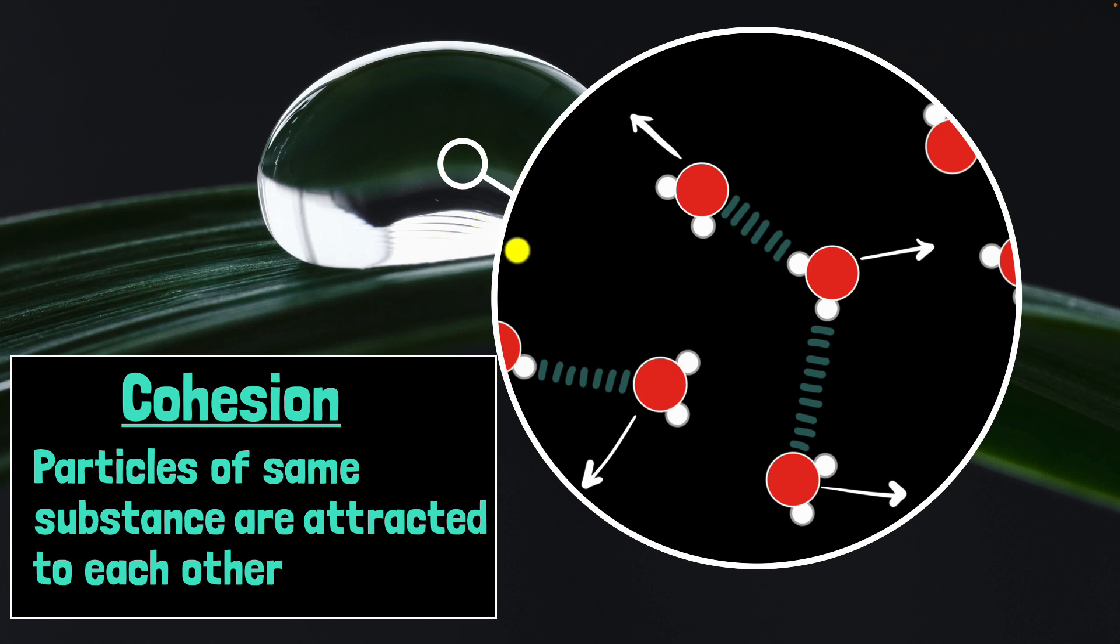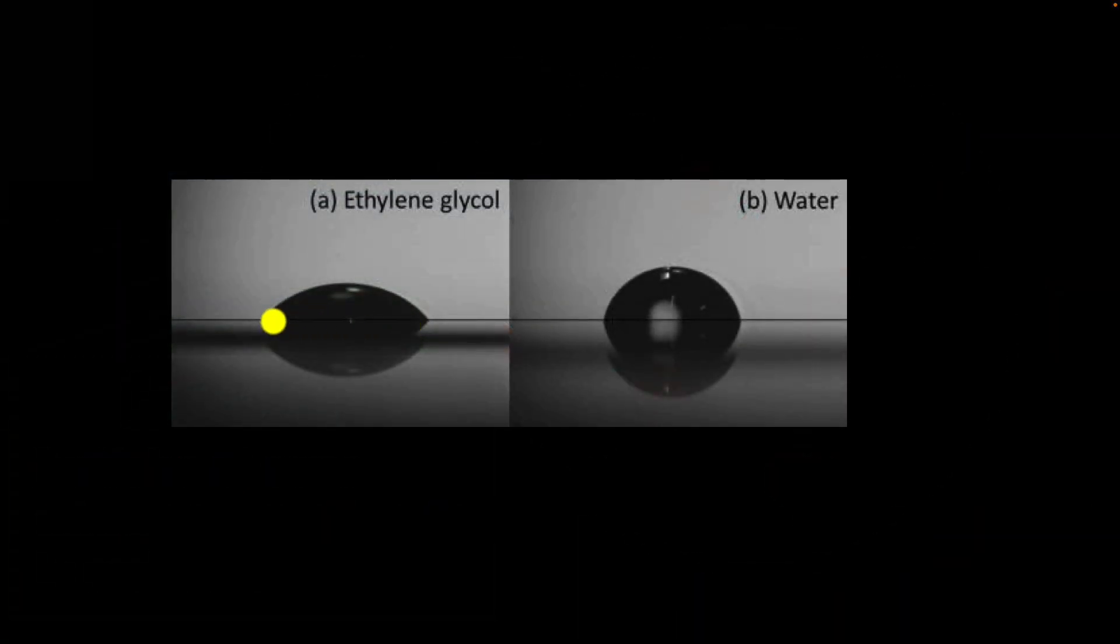And guess what? Turns out that cohesion is much stronger in water compared to other liquids. For example, look at the drop of, say, an alcohol. You can see that it's much more flattened compared to that of water. That's because cohesion is less over here. The cohesion over here is more.